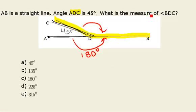Therefore, the measure of angle BDC would be given by 180 degrees minus 45 degrees, which is 135 degrees, giving us B as our answer.